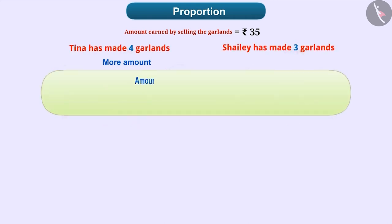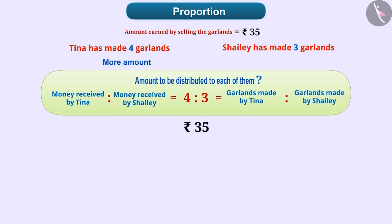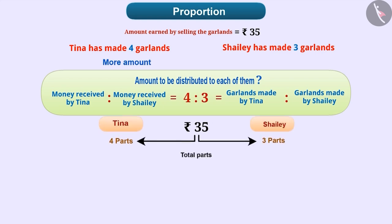To know the amounts to be distributed to each of them, we need to divide Rs. 35 in such a way that the ratio of money received by Tina and Shelly should be equal to the ratio of garlands made by Tina and Shelly respectively. This means, out of Rs. 35, 4 parts go to Tina and 3 parts go to Shelly. Therefore, the total number of parts divided is 4 plus 3 which is equal to 7. Thus, in total Rs. 35, 4 by 7 parts belong to Tina and 3 by 7 parts belong to Shelly.